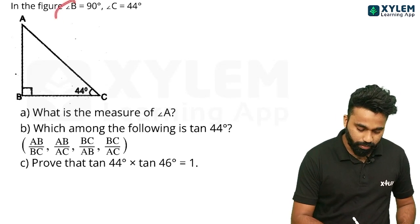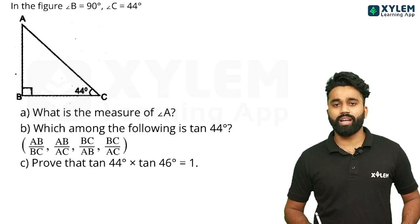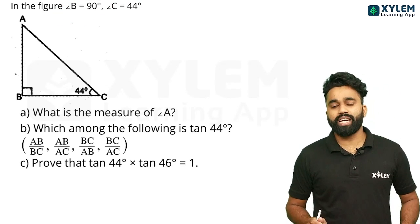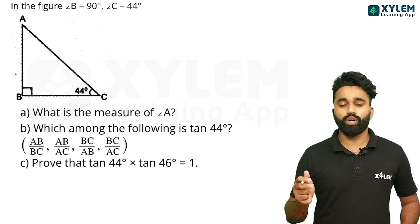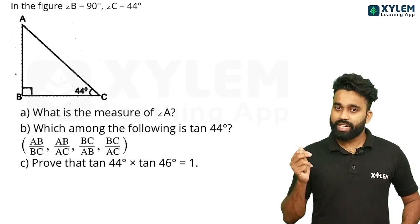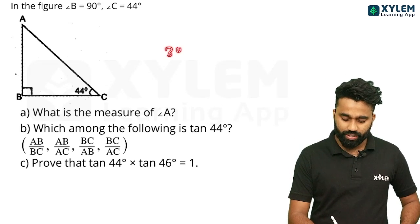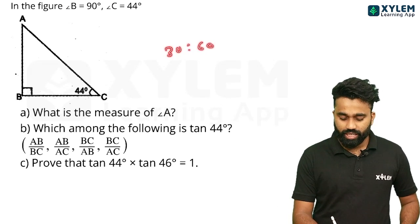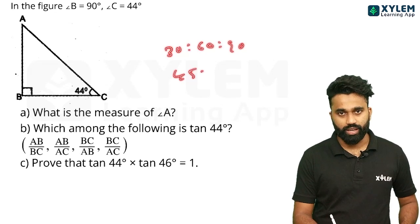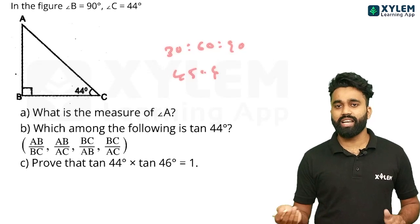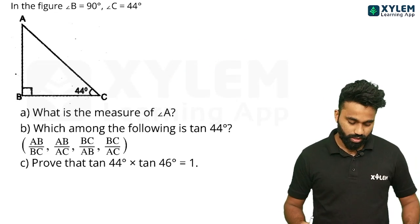If you want to see this, angle B is equal to 90 degrees. The angles are 30, 60, 90 and 45, 45. For these three angles, you can see the ratio method. If you want to find the angle, you can see the equation in the same way.